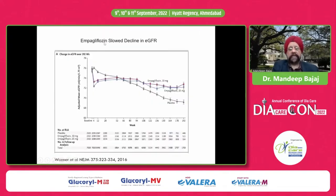The results from EMPA-REG showed that EMPA slowed the decline in eGFR. At 10 mg and 25 mg, both doses slowed the decline in eGFR over 192 weeks, whereas with placebo there was a steady decline in eGFR from approximately 87-88 down to the 70-68 range.